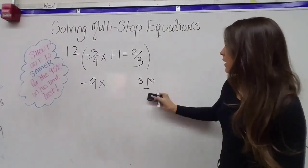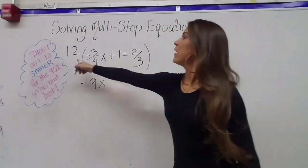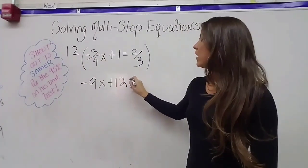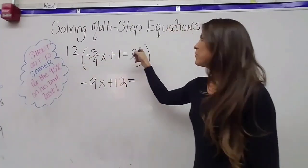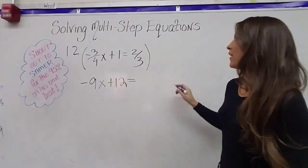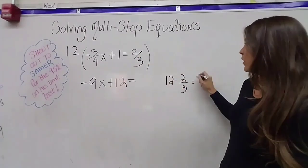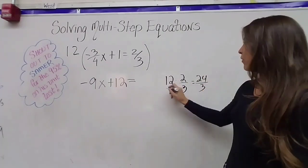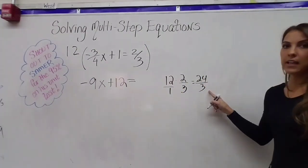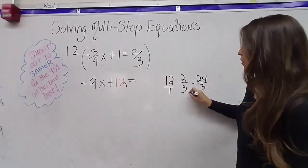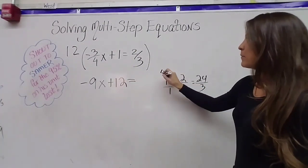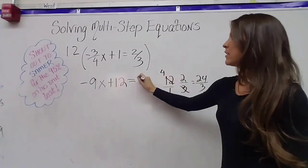So let's keep multiplying. We have 12 times positive one. So we have plus 12 equals 12 times two-thirds. So again, two different ways. 12 times two-thirds. I can look at it and say this is 24 divided by three, which is just eight. Or the shortcut, I can say three goes into 12 four times. Four times two is eight.